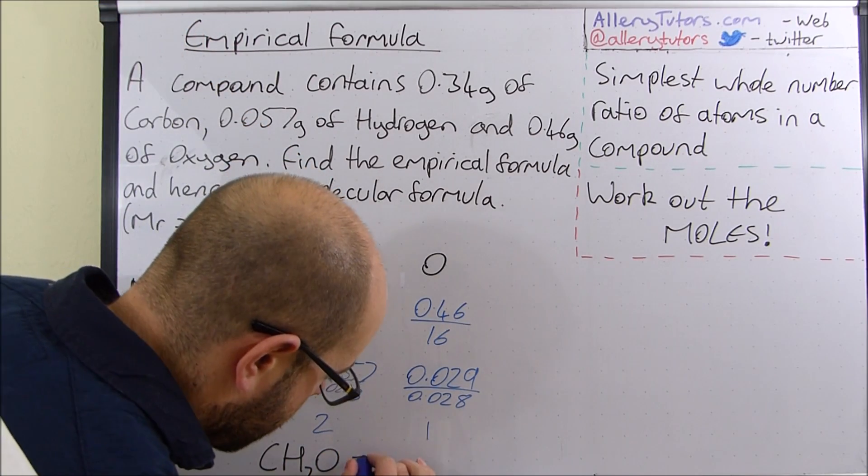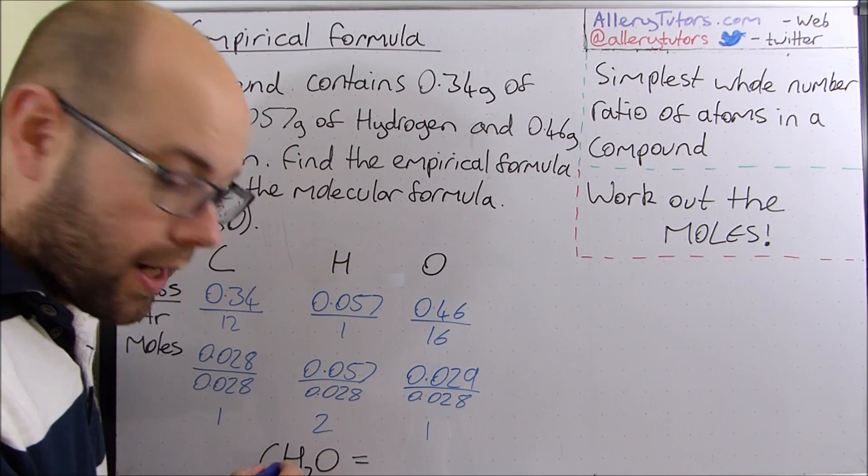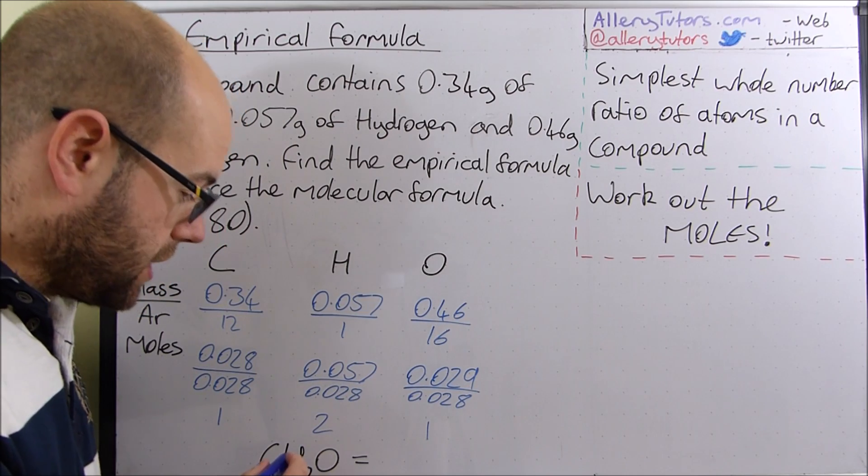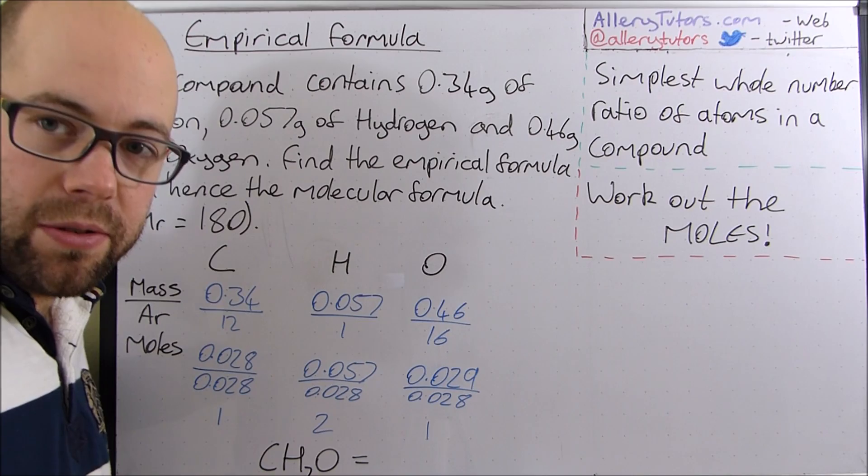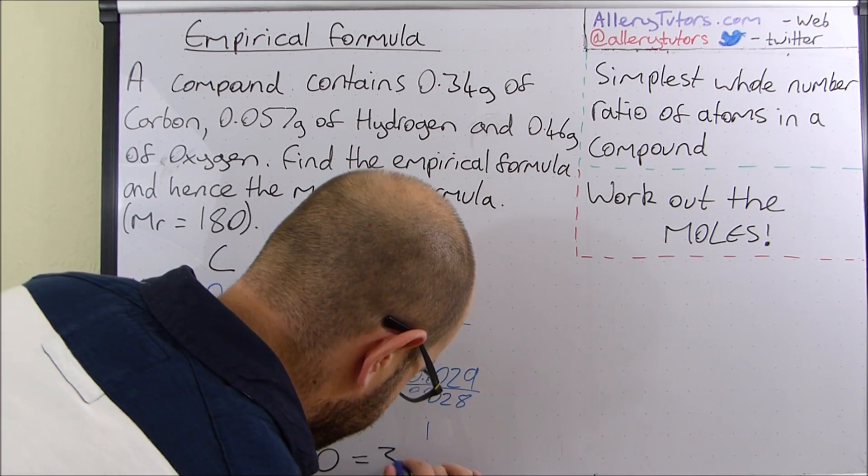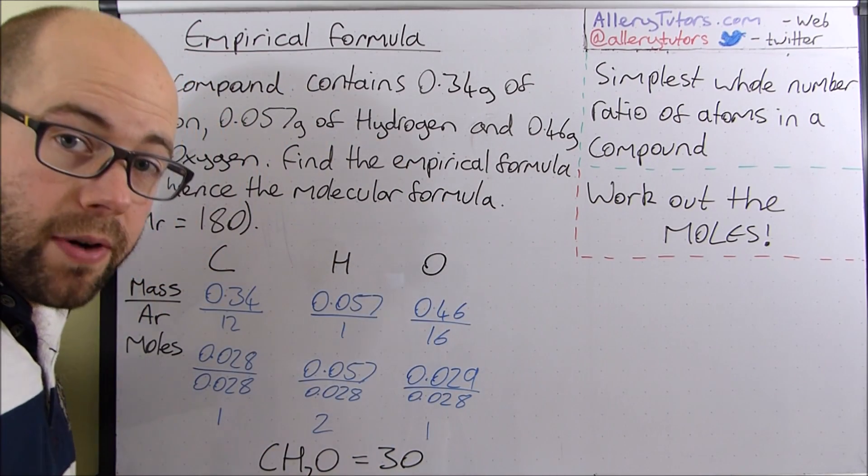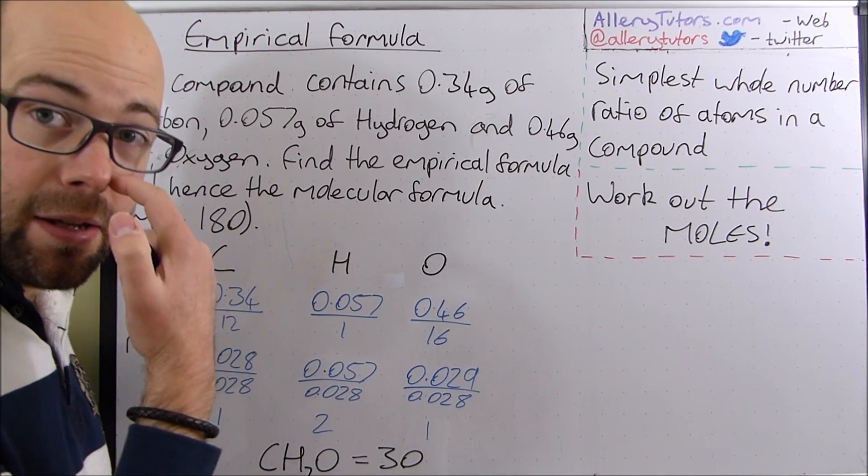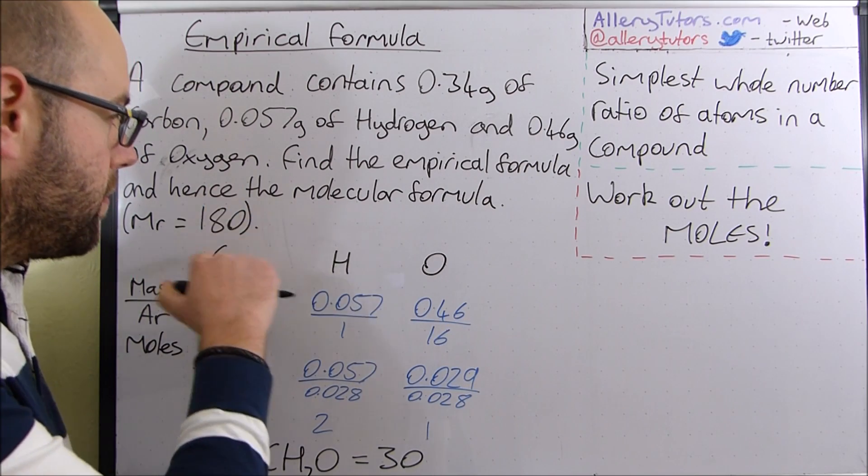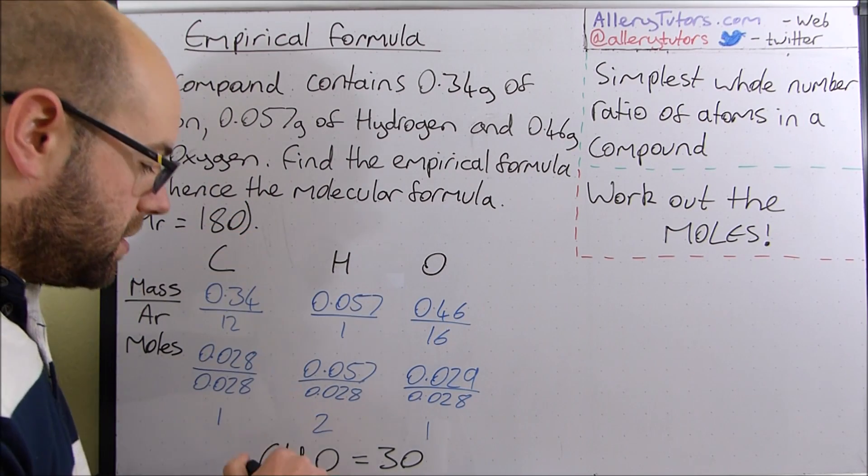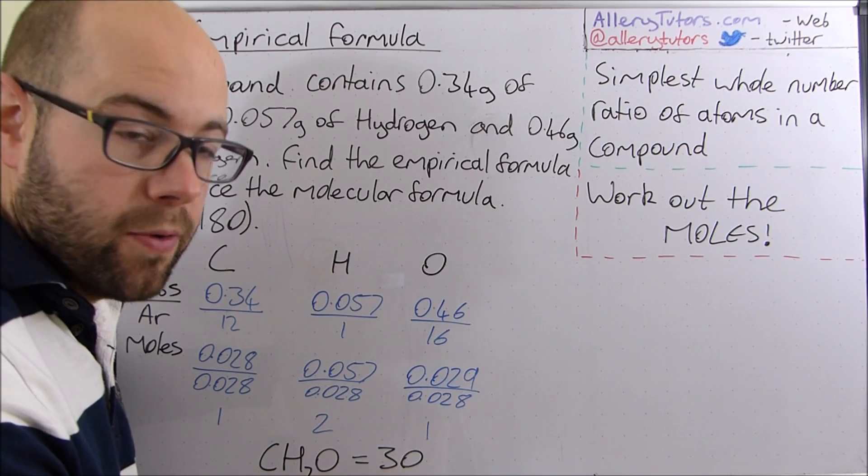Now if you work this out you've got carbon is 12, hydrogen is 1, we've got 2 of them so that's 14 plus the oxygen which is 16 and you add all that up and it should come to 30. So that's the MR of our empirical formula. Now to work out the molecular formula or the multiplier we need to take the MR of the molecular formula and we need to divide it by the MR of the empirical formula.